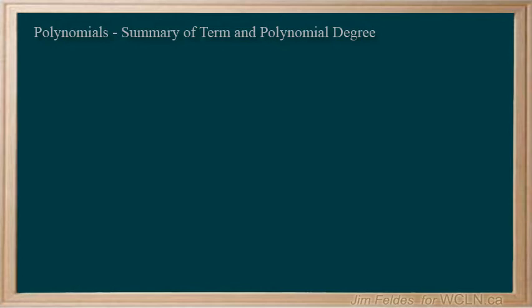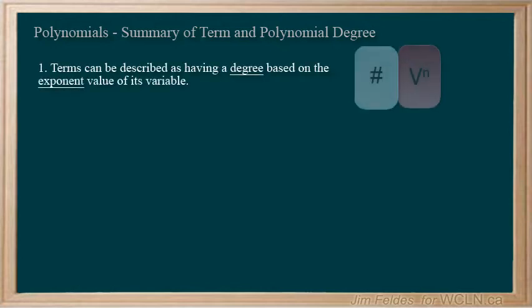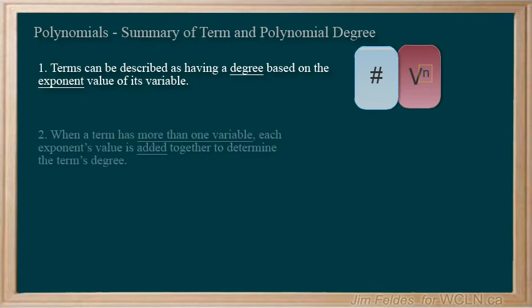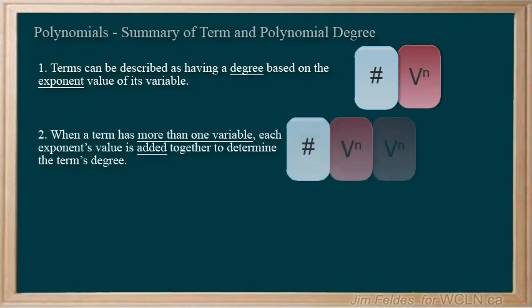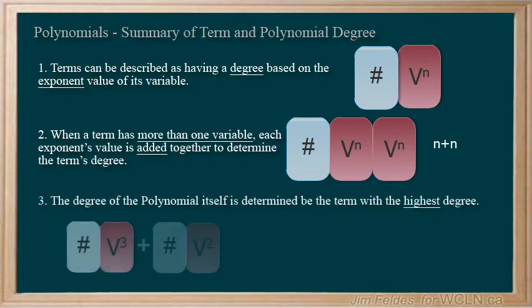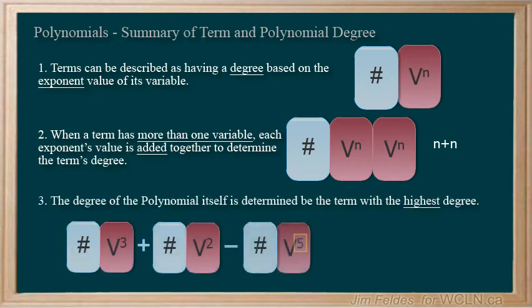To summarize this section we have learned, terms can be described as having a degree based on the exponent value of their variable. When a term has more than one variable, each exponent value must be added together to know its degree. The degree of the polynomial itself is determined by the term with the highest degree.